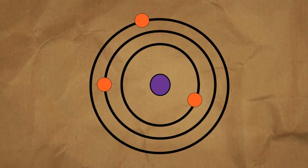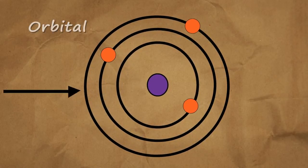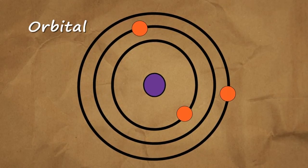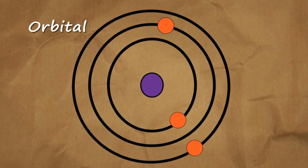The volume of space around the nucleus where an electron is likely to be found is called the orbital of that electron. Some electron orbitals near the nucleus are spherical, others are dumbbell shaped, and still others have different shapes.